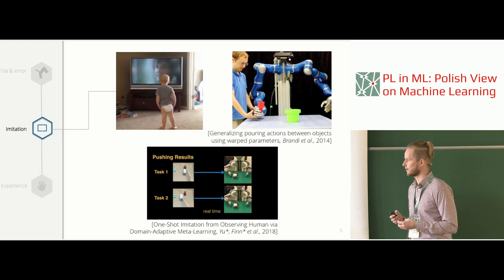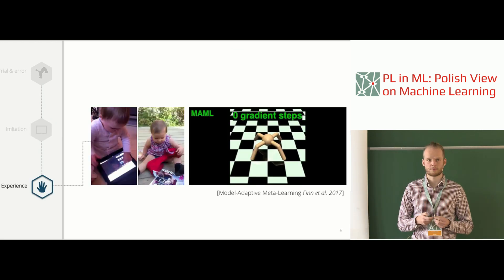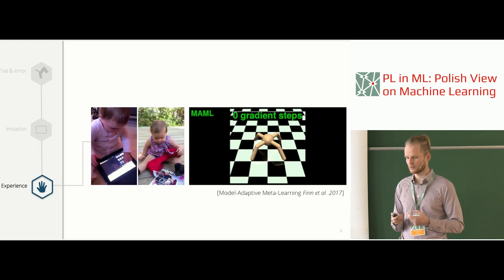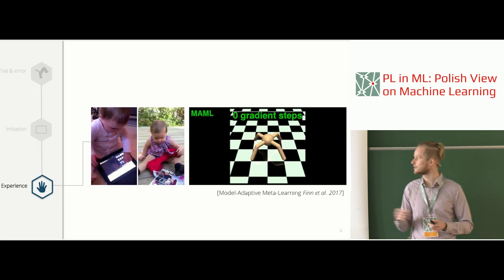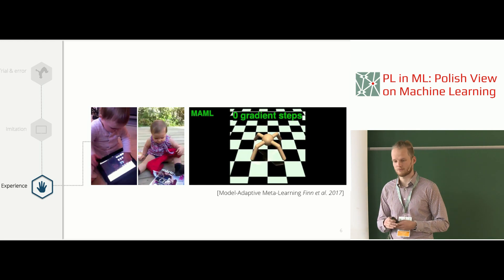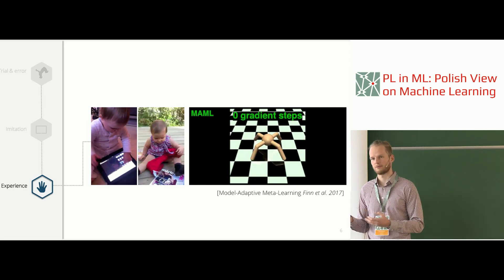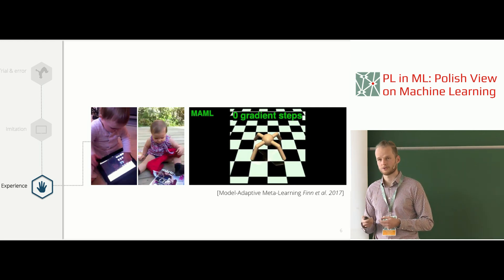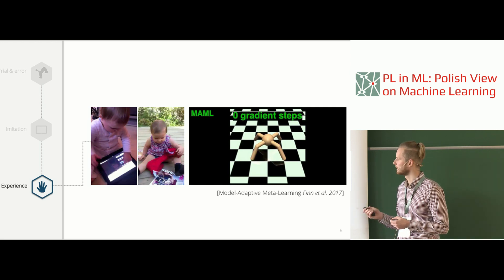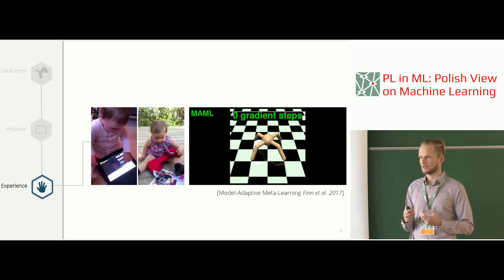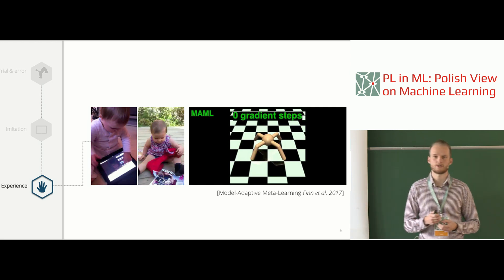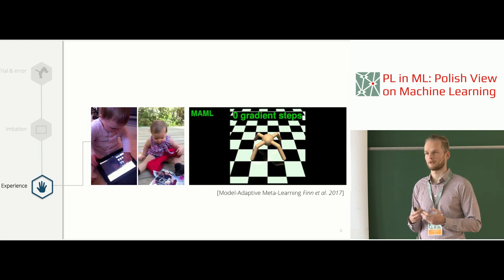The third part — learning from prior experience — hasn't received as much love. We do this all the time as humans. For example, a baby exposed to an iPad does sweep and zoom motions and then tries to apply them to a magazine, where they don't work. In robotics, meta-learning addresses this: in model-agnostic meta-learning (MAML), networks are pre-trained such that at test time, by taking just a few gradient steps, we can adjust our policy very quickly to a new situation.